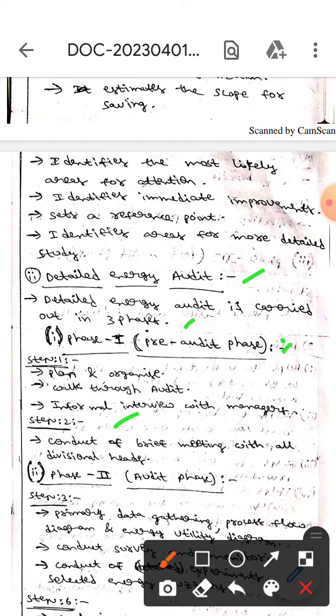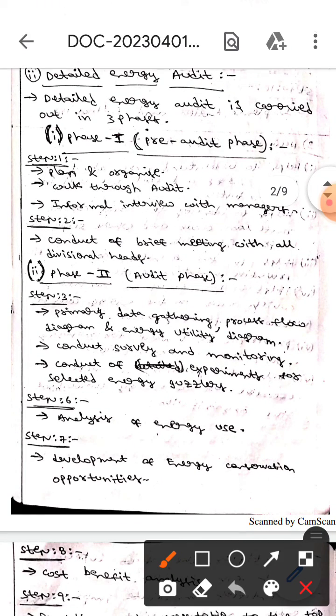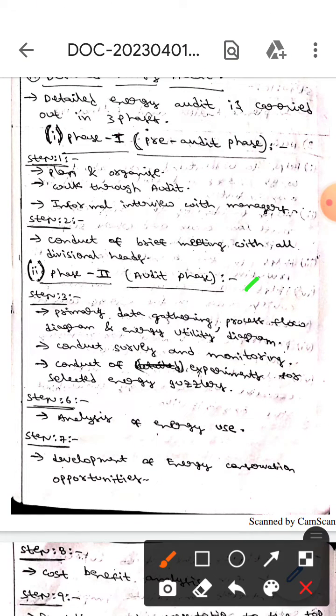The next one is phase two, the audit phase. There are a few steps in that. Step three is primary data gathering, process flow diagram, and energy utility diagram. After that, conduct survey and monitoring, then conduct experiments for selected energy guzzlers.